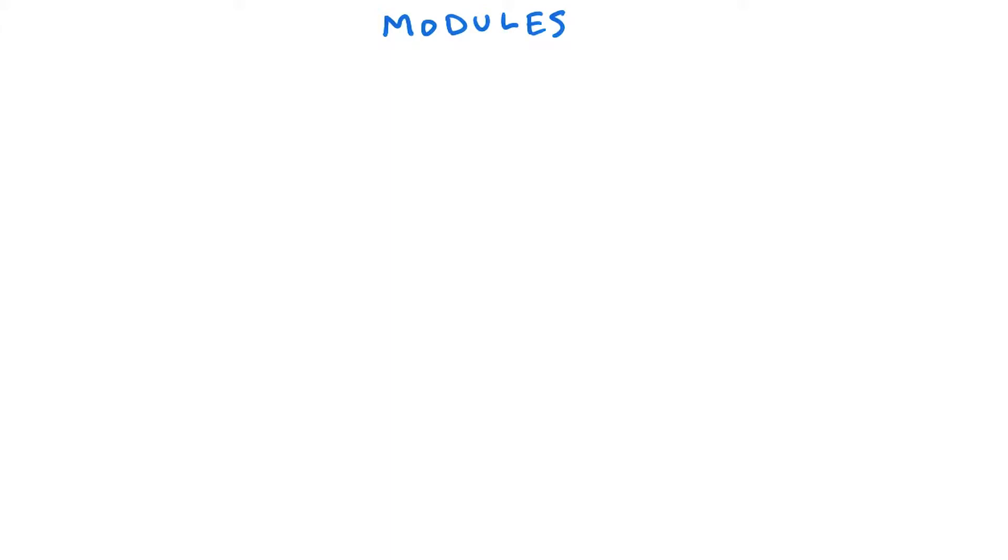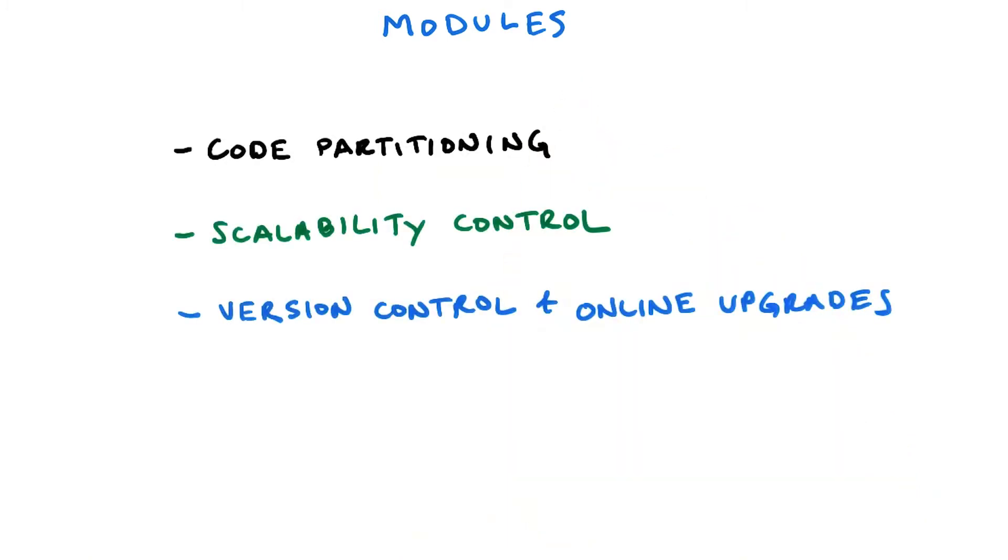So now when we have written all this code, let's look at how to scale your application using modules. Modules are a serious heavy duty function within App Engine, and they allow you to partition your code, have better control over scalability, and do version control and online upgrades.